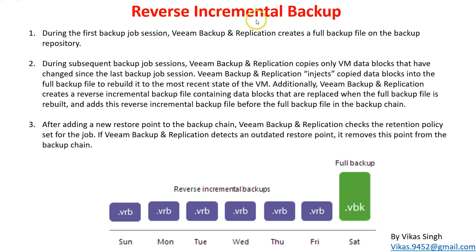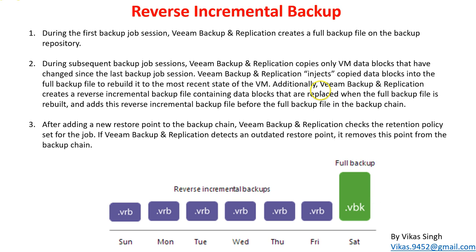Next is reverse incremental backup. The file extension for reverse incremental is VRB, and the full backup uses VBK. During the first job session, a full backup is created. During subsequent backup jobs, Veeam copies only the data blocks that have changed since the last backup job, then injects the changed blocks into the full backup file and rebuilds the most recent state of the virtual machine.